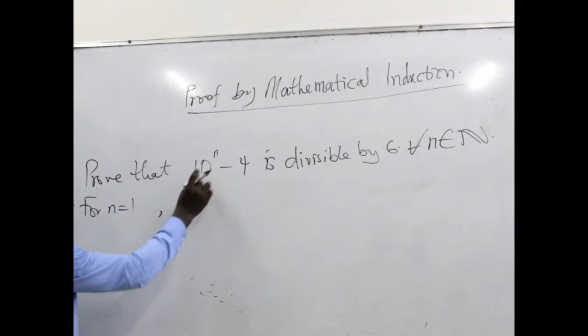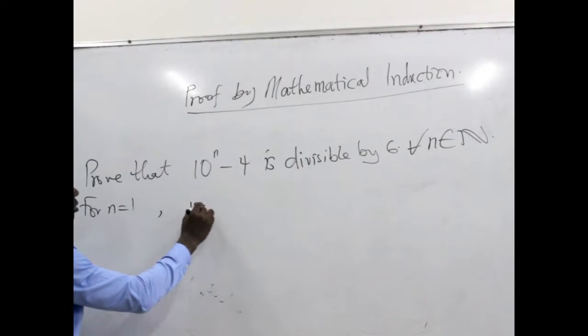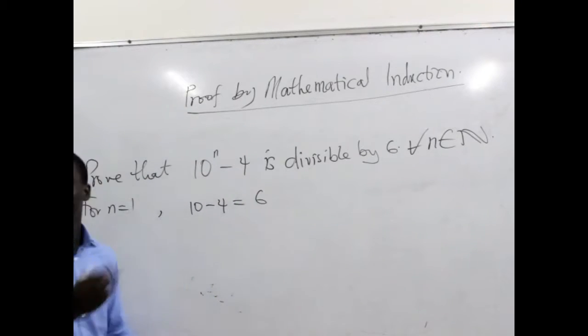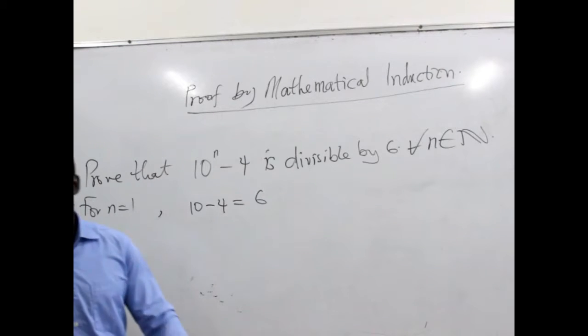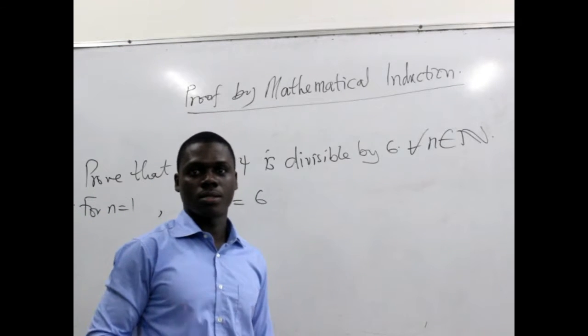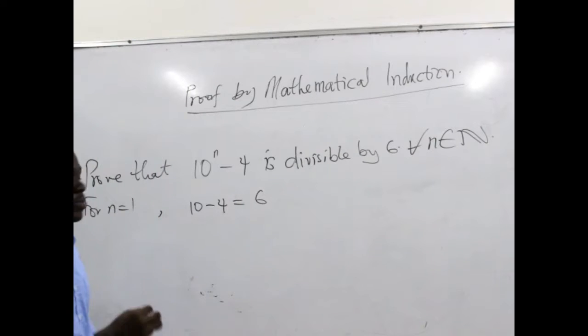Substituting 1 in place of n, we have 10 minus 4 equals 6. You agree with me that 6 is actually divisible by 6, so the proof has been anchored.